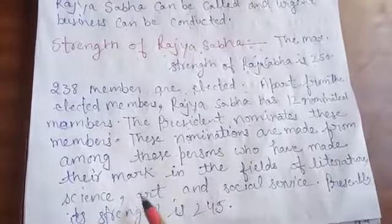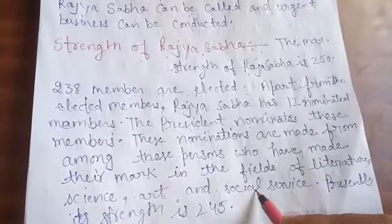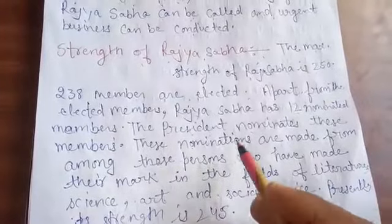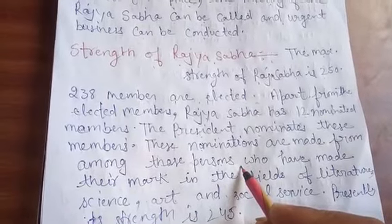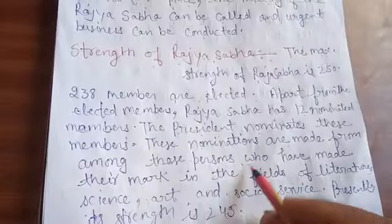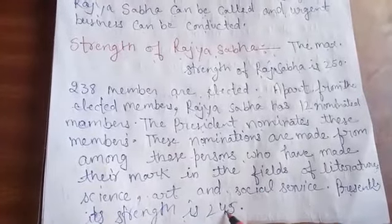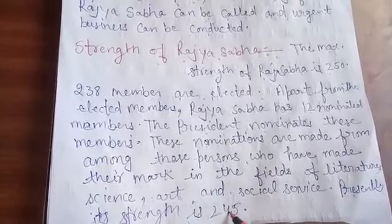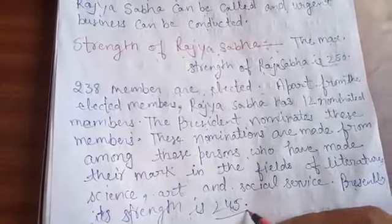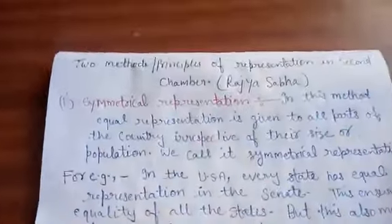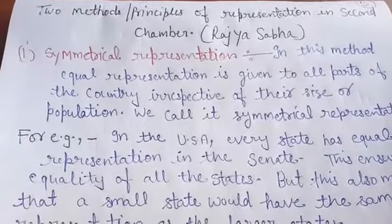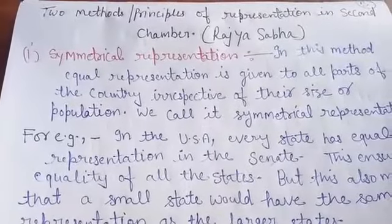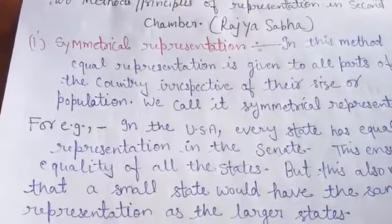The President nominates these members from different fields — literature, science, art, and social services, etc. The President nominates these members on the advice of the government, or we can say, the Council of Ministers. Presently, the strength of Rajya Sabha in India is about 245. The maximum is 250, but presently the strength is 245. So, 238 members are elected and 12 members are nominated by the President.